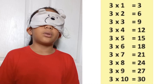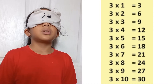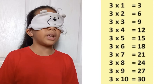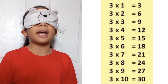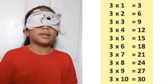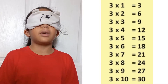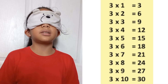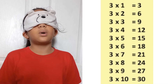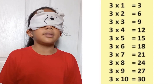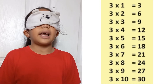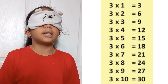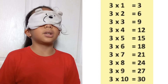3 times 1 equals 3. 3 times 2 equals 6. 3 times 3 equals 9. 3 times 4 equals 12. 3 times 5 equals 15. 3 times 6 equals 18. 3 times 7 equals 21. 3 times 8 equals 24. 3 times 9 equals 27. 3 times 10 equals 30.